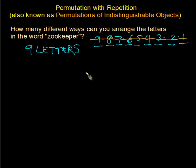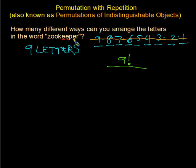What we're going to do is make a fraction. In the top part of the fraction we start with 9 factorial, but then we divide out the repeats. Since there are three E's, we divide the 9 factorial by 3 factorial. And since there are two O's, we also divide by 2 factorial. This is the key technique we'll use.